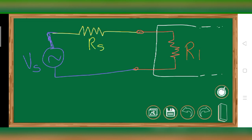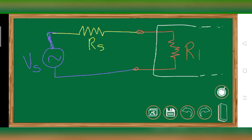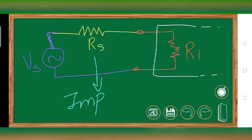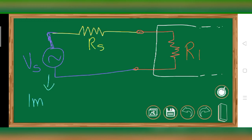The internal input impedance of the amplifier, R1, should be as high as possible — I'll explain why. Consider this setup: RS is the source resistance, which is the impedance or resistance of the wire. Ideally it's zero, but practically it's around 20 to 50 ohms. Now consider we are applying 1 millivolt of signal from VS, which we want to amplify to 1 volt.